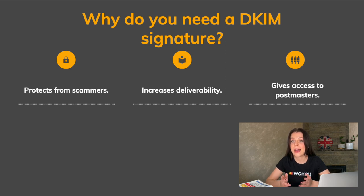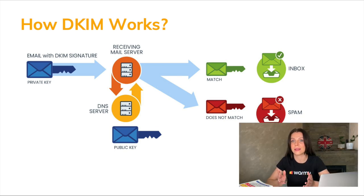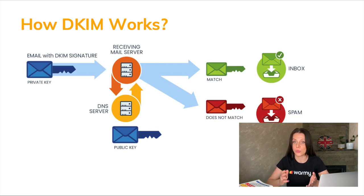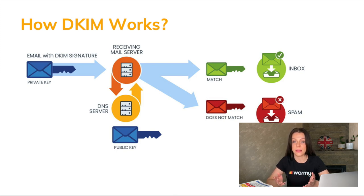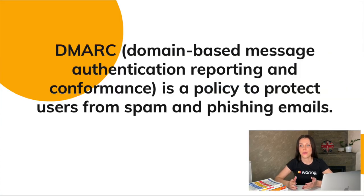To enable statistics in the postmaster, you must have email authentication configured, and DKIM is one of those components. How does DKIM work? The letter contains encrypted data about who and when the letter was sent. The mail provider receives this data along with the letter and decrypts it using the public key posted on the domain from which the letter was sent. If the data matches, this is an honest sender and the letter can be sent to the inbox. If not, it is a scammer and the letter goes to spam.